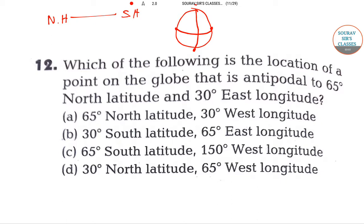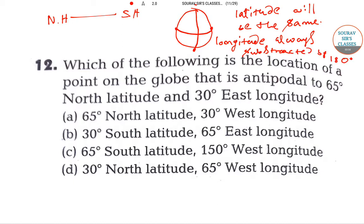Because antipodes are always 180 degrees of longitude away. So I will write this: the latitude will be the same, but the longitude is always subtracted by 180 degrees. So if we want to find the antipode of 65 degree north latitude and 30 degree east longitude, it will be 65 degree south latitude.